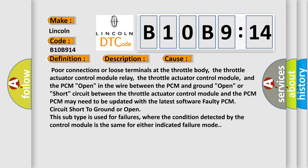Poor connections or loose terminals at the throttle body, the throttle actuator control module relay, the throttle actuator control module, and the PCM. Open in the wire between the PCM and ground.